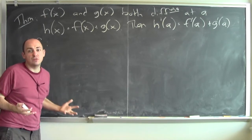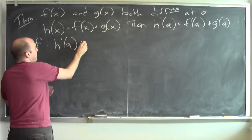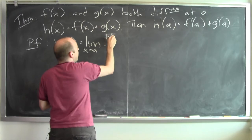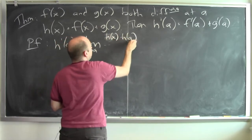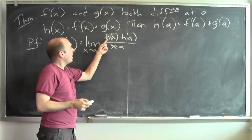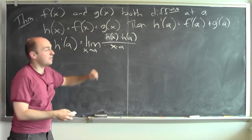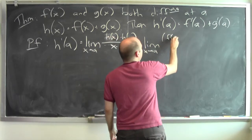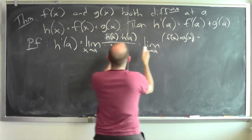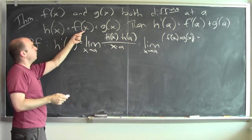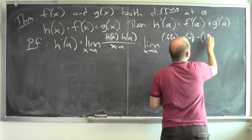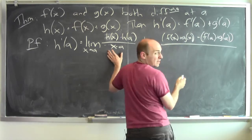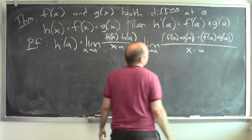Well, I just go back to the definition of derivative. The derivative of this function h at the point a is the limit as x goes to a of h of x minus h of a over x minus a. Now I know what h of x is — h of x is f of x plus g of x. And h of a is f of a plus g of a. This is all divided by the same denominator, x minus a.